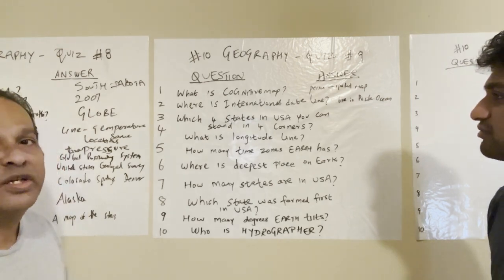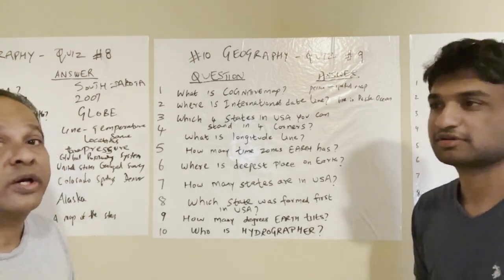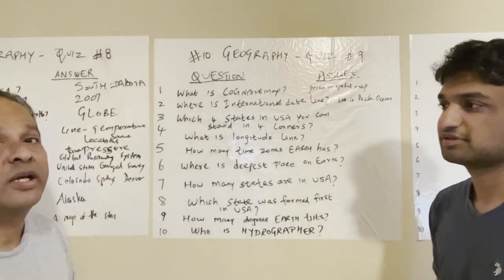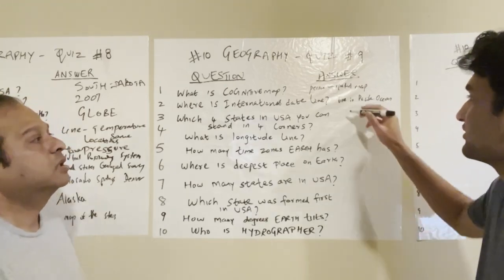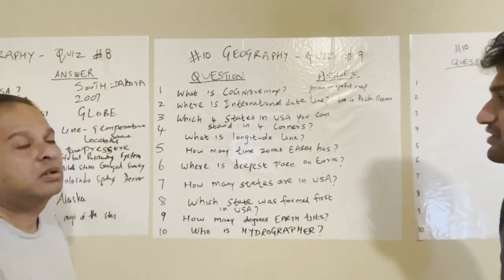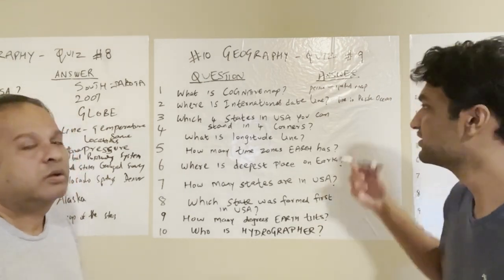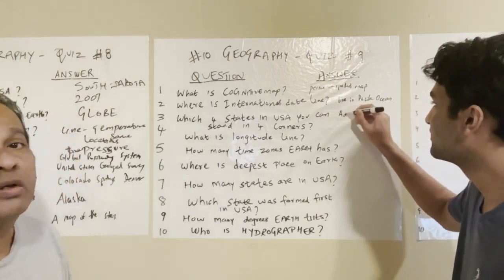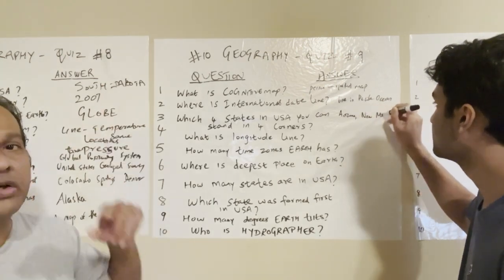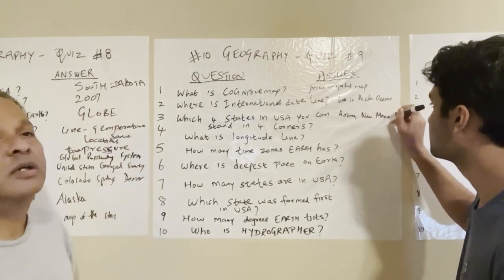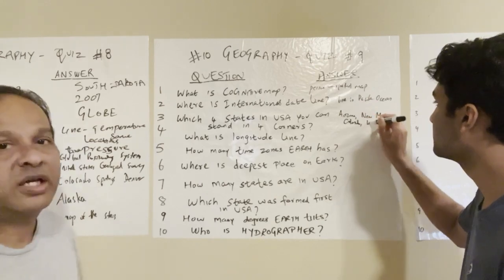Which four states in the USA share a corner like four corners of a square? It's Arizona, Colorado, New Mexico, and Utah. It's like four corners — the locations are positioned like that naturally.